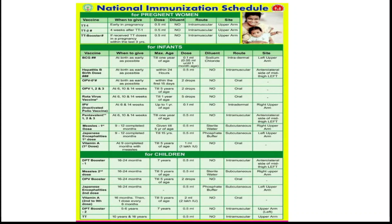Japanese Encephalitis (JE) first dose is given at the same time as the measles first dose — that is, 9 to 12 completed months — and can be given up to 15 years of age. The dose is 0.5 ml, subcutaneous, left upper arm. Note: measles first dose is given on the right upper arm, JE first dose on the left upper arm.